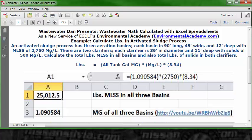If you go to your Excel spreadsheet and follow that, using six decimals, you'll get 1.090584, which is what I'm going to insert into the formula here for pounds of MLSS in all three basins. So go to